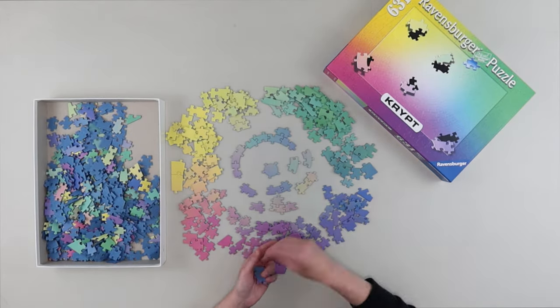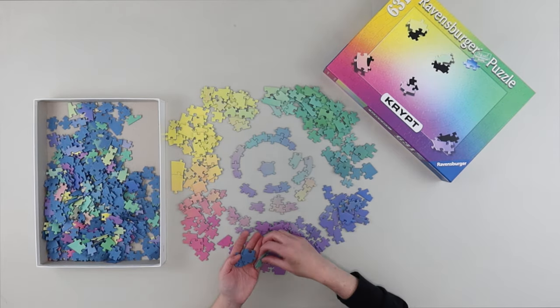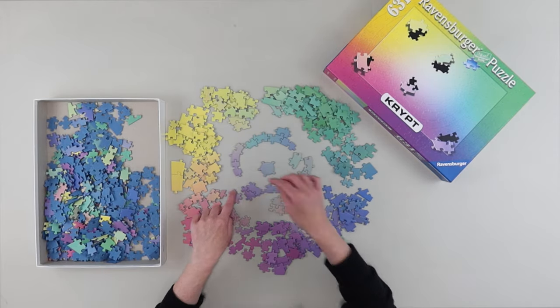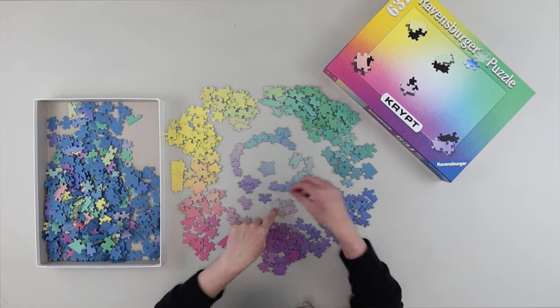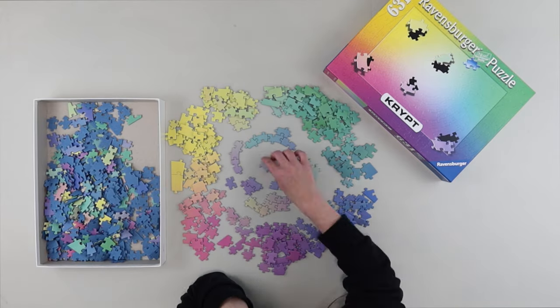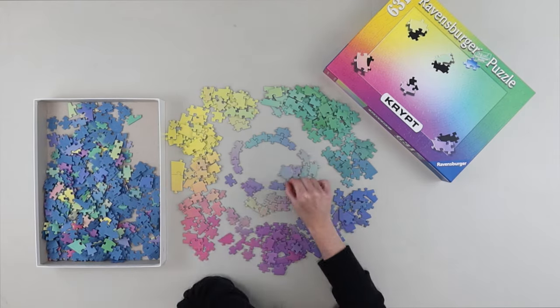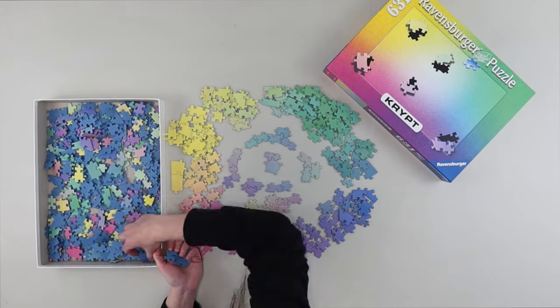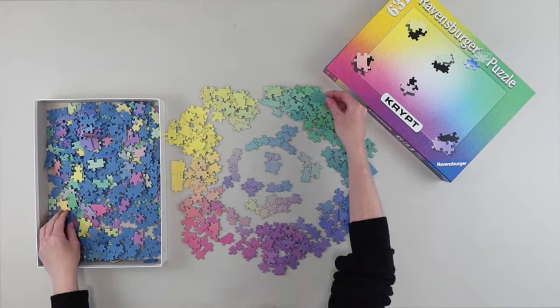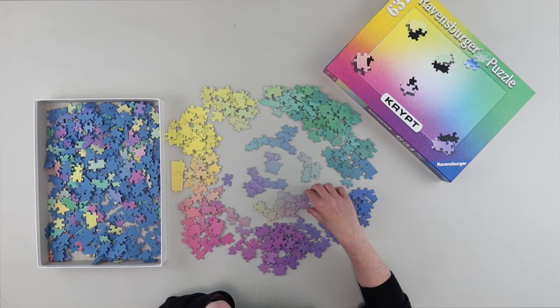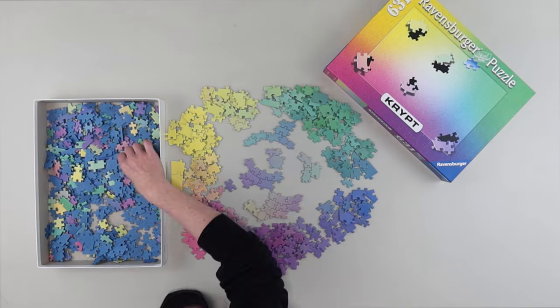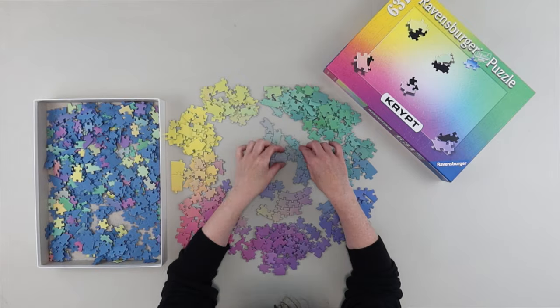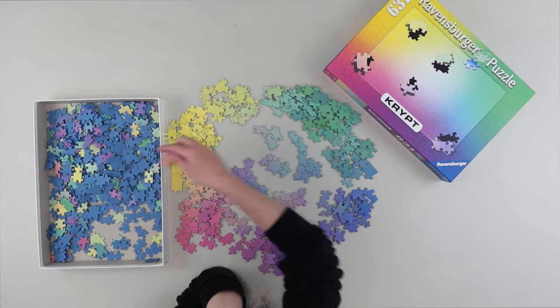Now is it just me or do the Crypt pieces feel thicker? Maybe sturdier? Maybe it's just because the puzzle pieces themselves are bigger, so they just feel sturdier. But they're really nice. And there was just a little bit of puzzle dust at the end. It didn't feel like there was as much as the usual thousand piece Ravensburger jigsaw puzzle. I didn't mind it at all.